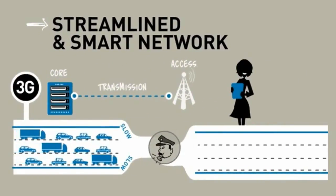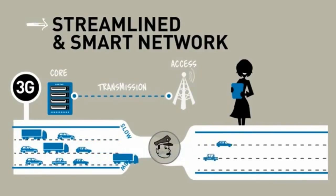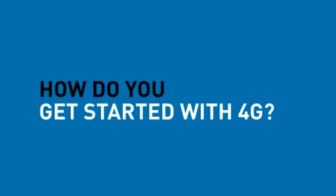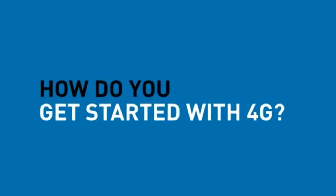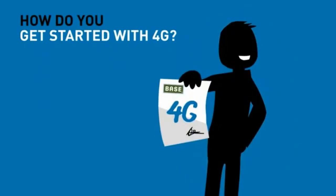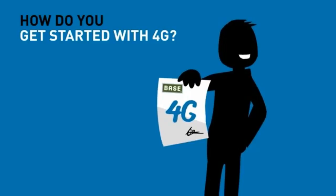Finally, 4G's network architecture is smarter and flatter. When you connect, you're no longer transferred to a controller that regulates the traffic flow. Because of 4G's smart network architecture, antennas will immediately find the best way for you to connect.